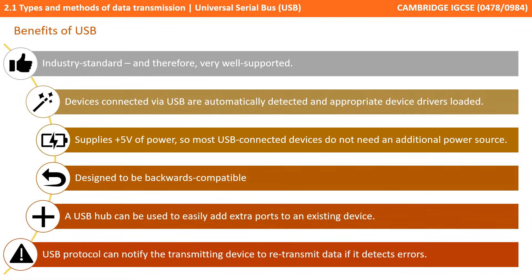There's also no need for a separate power source for most USB connected devices, as it supplies its own power. It's already designed to be backwardly compatible with older versions of the technology. Adding extra USB ports is easy with a USB hub, and the USB protocol can notify the transmitter to retransmit data if errors are detected.